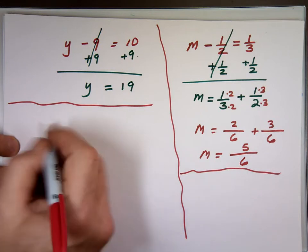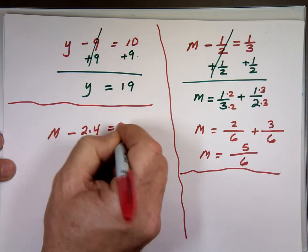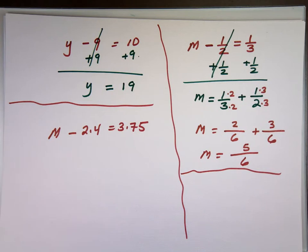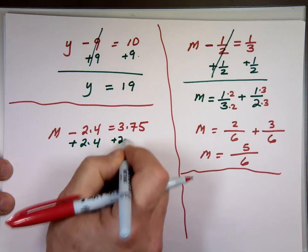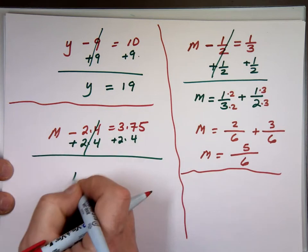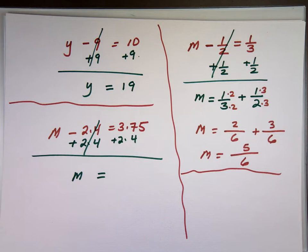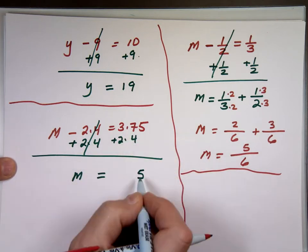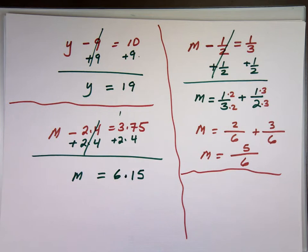The same applies with decimals. If I have m minus 2.4 equals 3.75 — that's subtraction, so we add 2.4 to both sides. When adding decimal numbers, the key is to line up the decimal points. 5 plus nothing is 5; 7 plus 4 is 11; carry 1; 1 and 3 is 4; 4 and 2 is 6. So m equals 6.15.